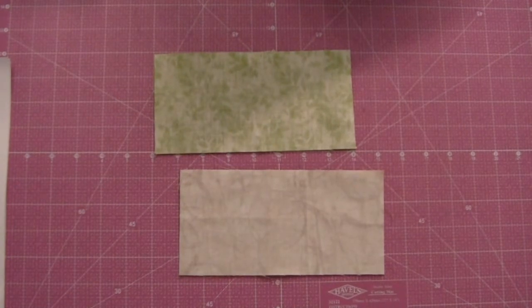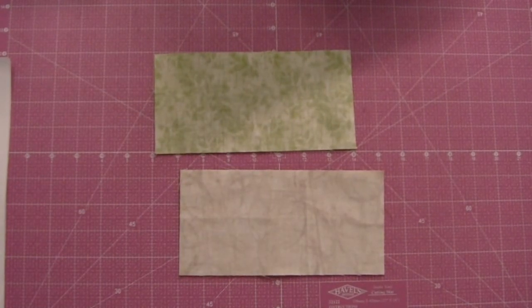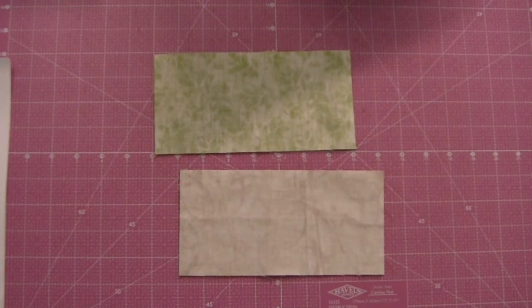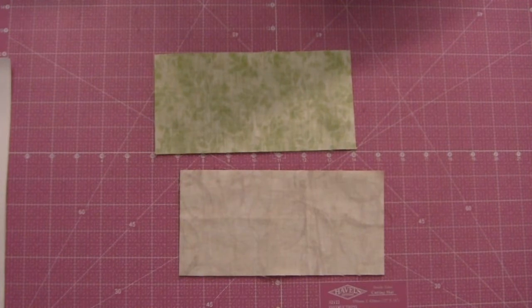Welcome to Month 4, Block 6 Star Puzzle of the Cheshire Quilters Guild 2018 Block of the Month. This month we have two blocks. This is Block 6, Star Puzzle. Look for the other video for Block 7, Rippling Star.